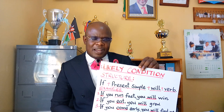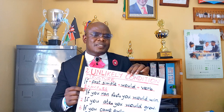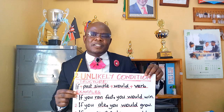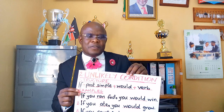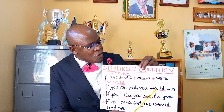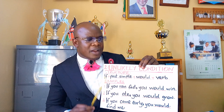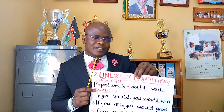Now let us look at the unlikely condition. Using the same examples, the structure here takes the form of the if clause plus past simple tense plus 'could' plus a verb. For example: if you ran fast, you could win; if you ate, you could grow; if you came early, you would find me. Those are what we call the unlikely conditions.